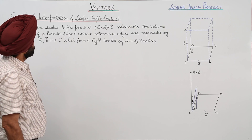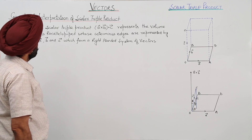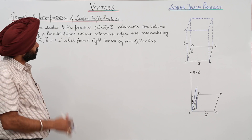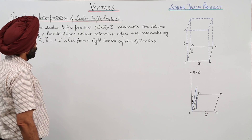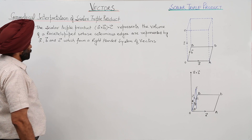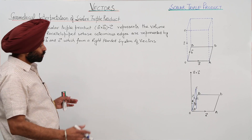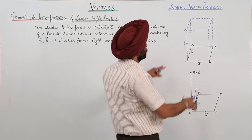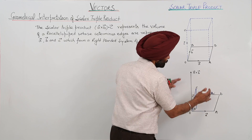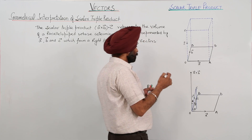Now, the geometrical interpretation of scalar triple product. The scalar triple product A cross B dot C represents the volume of a parallelepiped whose coterminous edges are represented by vectors A, B, and C, which form a right-handed system of vectors. I have just made a parallelepiped here, and a second figure just to explain the geometrical interpretation. Now let's start.